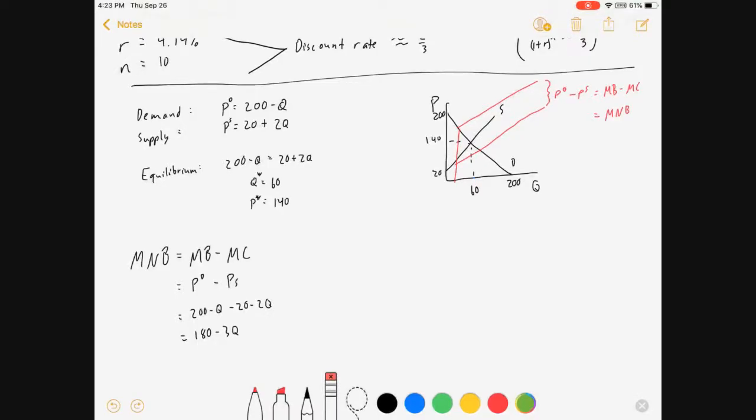Now notice that is telling you how far apart the demand curve and supply curve are. When quantity is zero, you can look at the two intercepts. They're 180 units apart. And then if Q is 60, like in equilibrium, that number will go to zero. So if I graph this, there's a marginal net benefits curve. It has an intercept of 180 and 60. And you will see that that point 60 corresponds with the equilibrium in the static market.